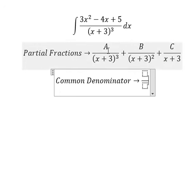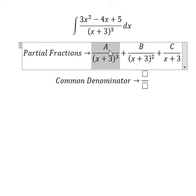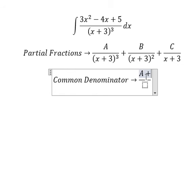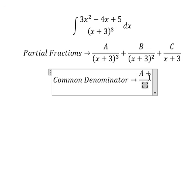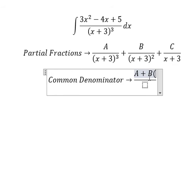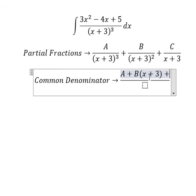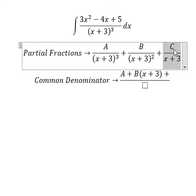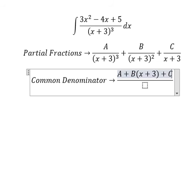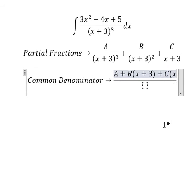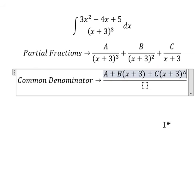For the A term, it is not missing anything, so we just put A. For the B term, it is missing (x+3), so we have B multiplied by (x+3). For the C term, it is missing (x+3)², so we have C multiplied by (x+3)².